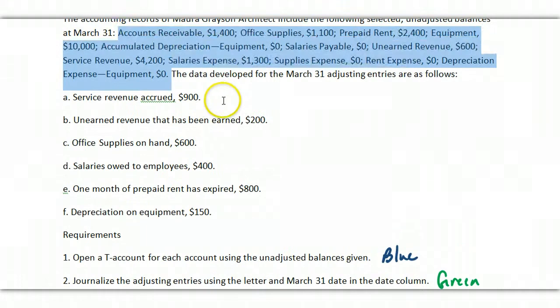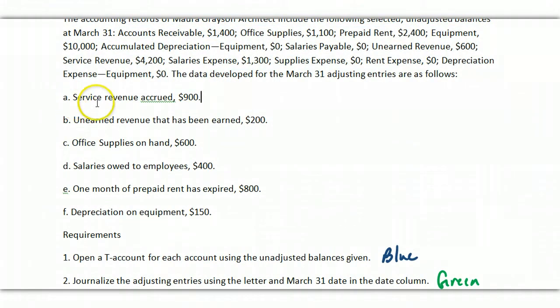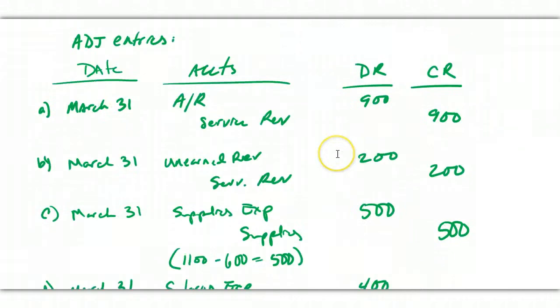All right, so let's go down and do the journal entries. A is service revenue accrued $900. So we've earned service revenue, we just haven't been paid yet. So March 31st, I debit accounts receivable, I credit service revenue for $900. This is always the adjusting entry to accrue service revenue.